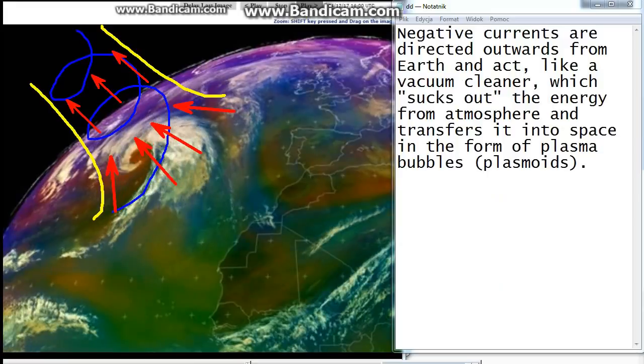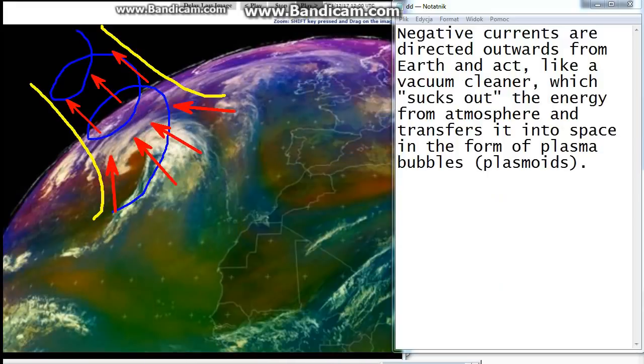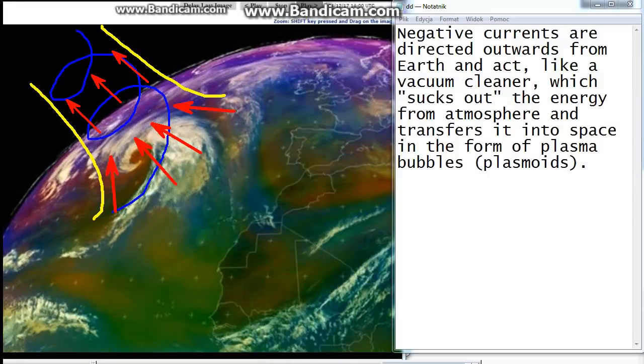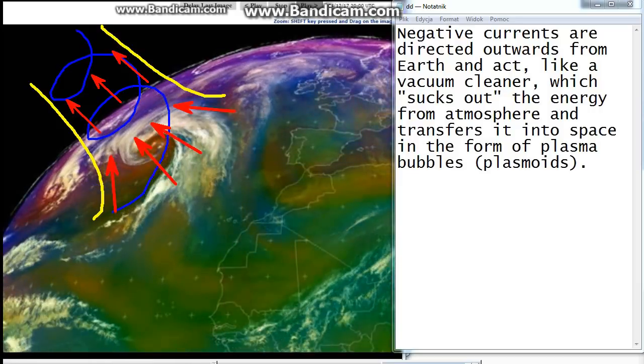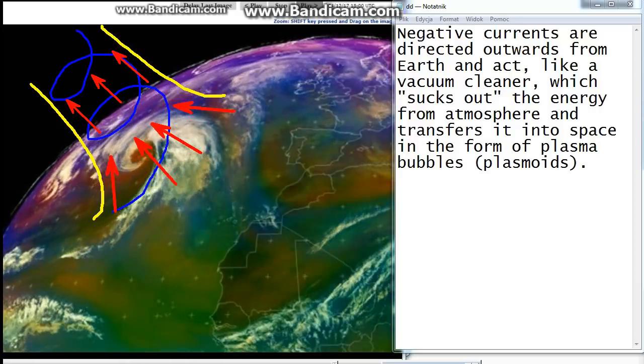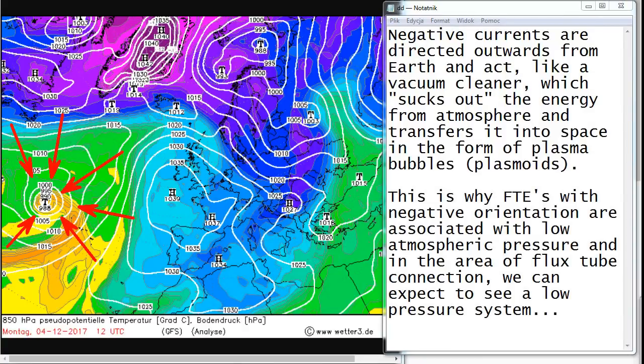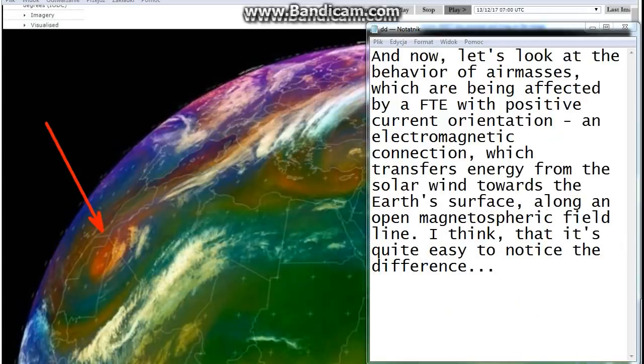Negative currents are directed outwards from Earth and act like a vacuum cleaner, which sucks out the energy from atmosphere and transfers it into space in the form of plasma bubbles, plasmoids. This is why FTEs with negative orientation are associated with low atmospheric pressure, and in the area of flux tube connection, we can expect to see a low pressure system.